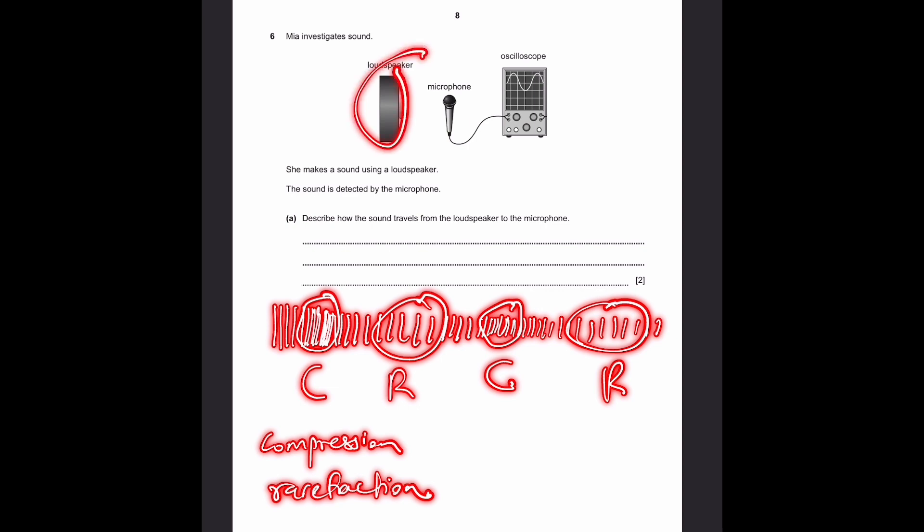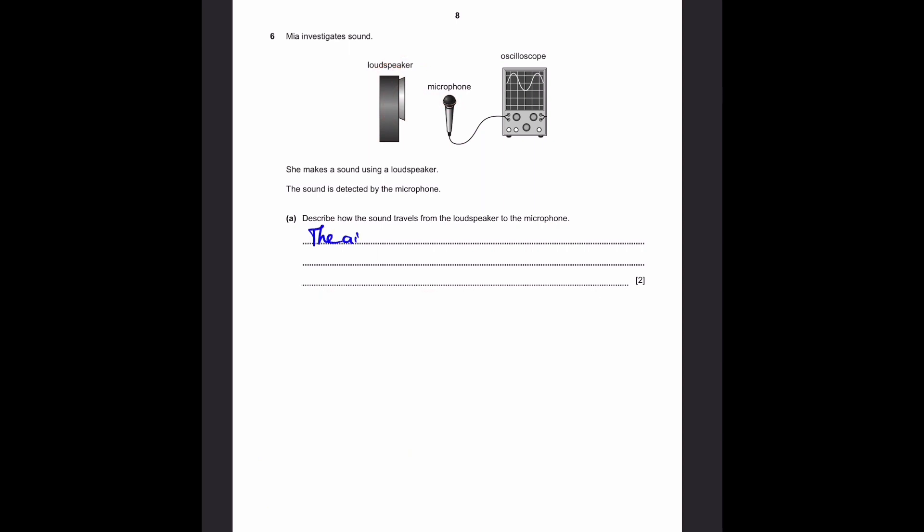So the loudspeaker causes air particles to vibrate around it. And this vibration of compressions and rarefaction causes it to travel in a straight line towards the microphone. And the microphone picks up this sound. That's what you need to write. So, the air particles vibrate in the form of compressions and rarefaction to cause the sound to travel in a straight line and be picked up by the microphone.